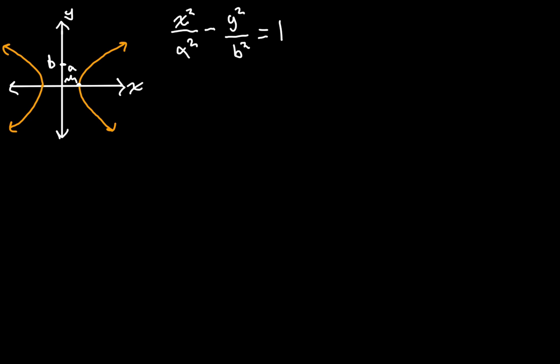So this isn't the kind of formal function that we think of because it doesn't pass the vertical line test. So we can't just take the derivative like normal. What we're going to have to do is use implicit differentiation. So what that is, is where we take the derivative of both sides, as I'm sure you're familiar with at this point.